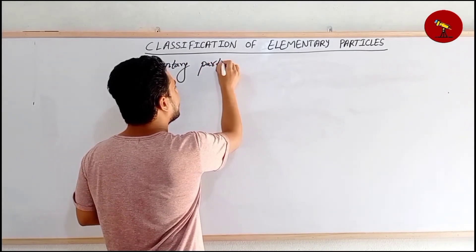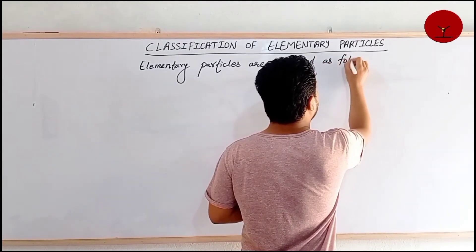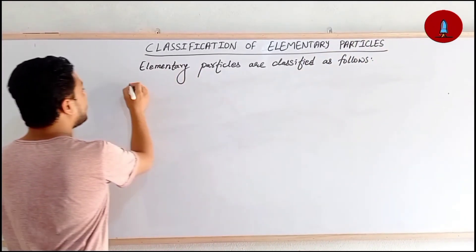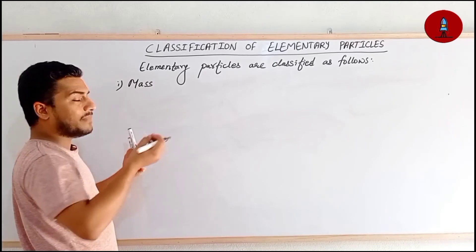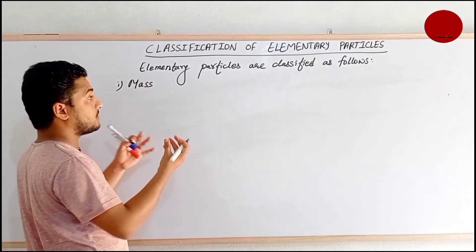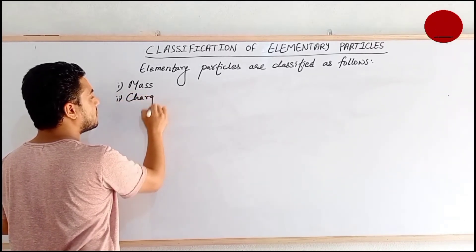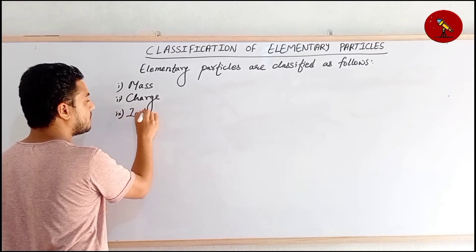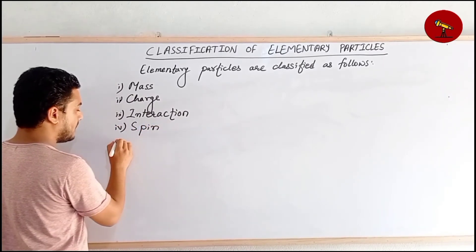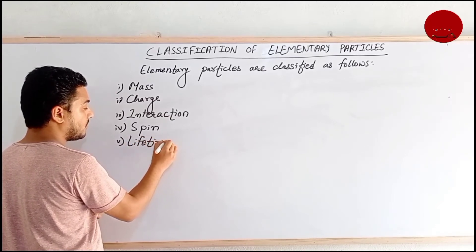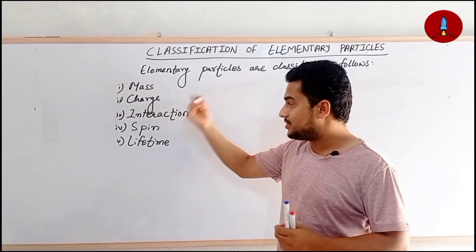Elementary particles are classified as follows. They can be classified according to their mass — some particles have very small or negligible mass whereas some have very high mass. They can also be classified according to their charge, interaction, spin, and lifetime.